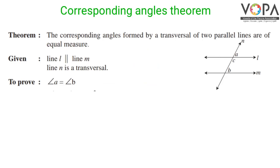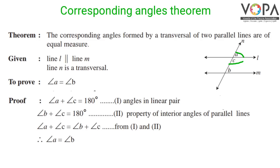Corresponding angles theorem: the corresponding angles formed by a transversal of two parallel lines are of equal measure. In the figure, line L is parallel to line M, and line N is the transversal. We have to prove that angle A is equal to angle B. In the proof: angle A plus angle C equals 180 degrees — statement 1 — as they are angles in a linear pair.